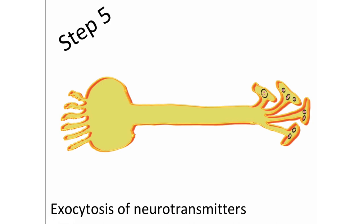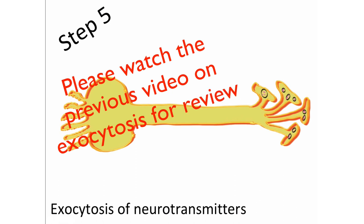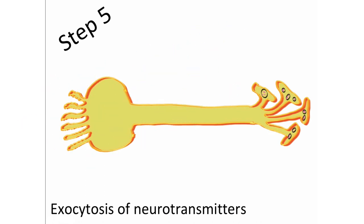The axon terminals contain the neurotransmitters — that's where they are stored until stimulated to be released. The release is the result of exocytosis, where the membrane of the synaptic vesicle fuses with the membrane of the axon terminals to release those neurotransmitters into a region known as the synaptic cleft, where they stimulate a muscle cell, a heart cell, or even another neuron.